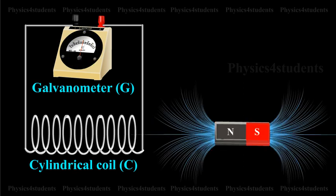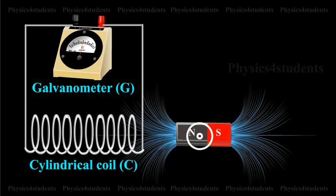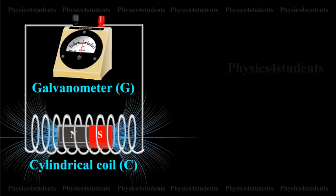This experiment consists of a cylindrical coil C, made of several turns of insulated copper wire connected in series to a sensitive galvanometer G. A strong bar magnet N-S with north pole pointing towards the coil is moved up and down.